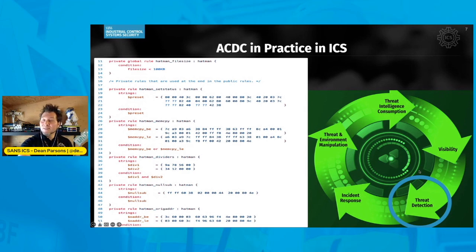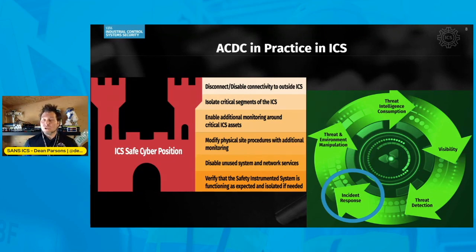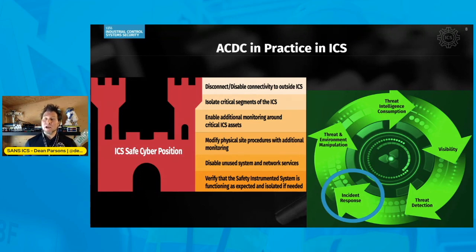When we do threat detection, we are going to find something in the visibility aspect from the traffic or also on an OT asset itself. From here, we're going to be doing incident response. Incident response is where engineering teams and ICS defense teams work together to isolate critical segments of the network. This is where you're going to be fighting through the attack to maintain safety and reliability of operations.